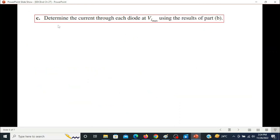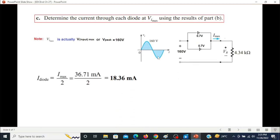Now part C: determine the current through each diode at VI maximum. Now this VI is for input, and use the result in part B. VI max is actually V input max or V peak, which is 160 volt. From this diagram you can see this is 160 volt peak.